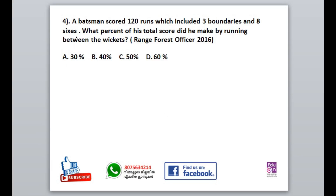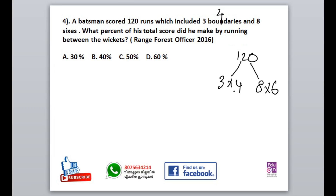If you have a question, I will ask you about the rules of cricket — I will ask you about the easy answer. A batsman scored 120 runs which include 3 boundaries and 8 sixes. What percentage of his total score did he make by running between the wickets? If you have a run between the wickets, you can run from 3 boundaries and 8 sixes — boundaries score 4 runs and sixes score 6 runs.